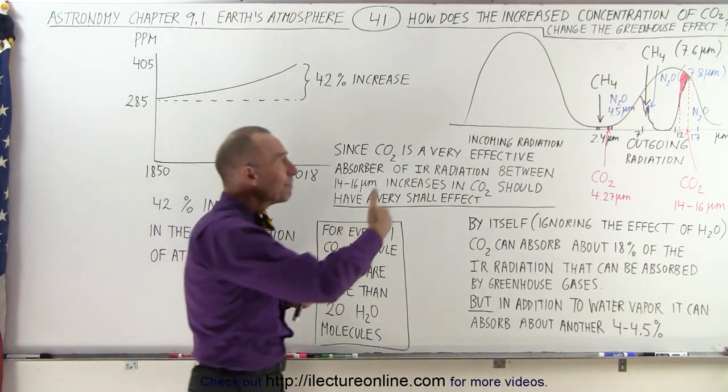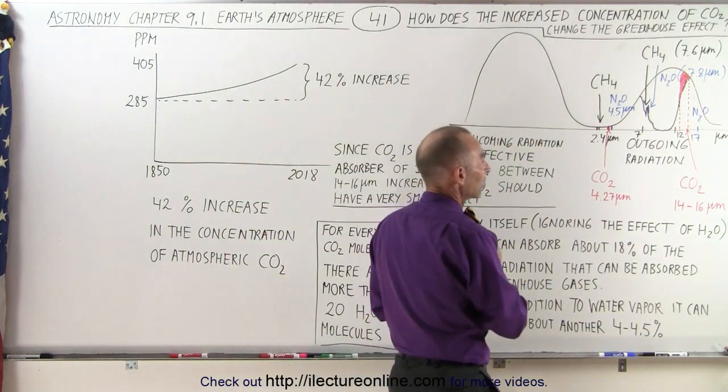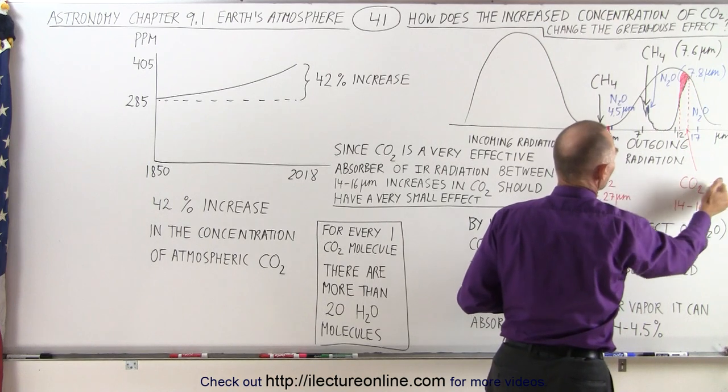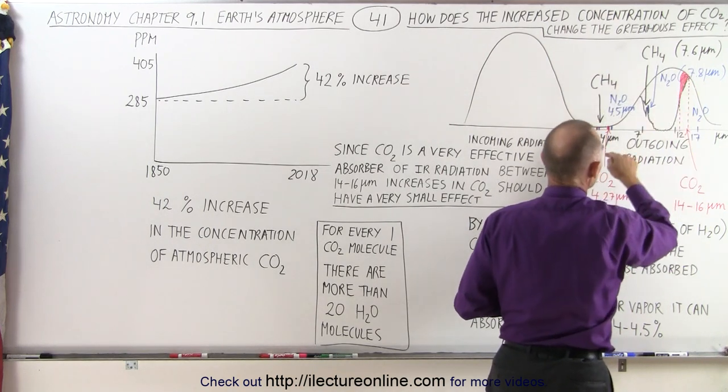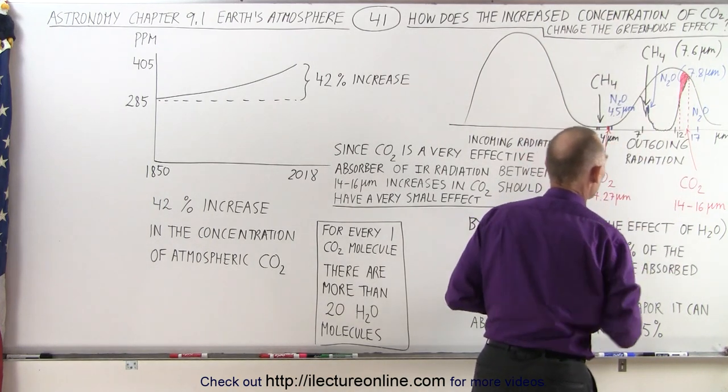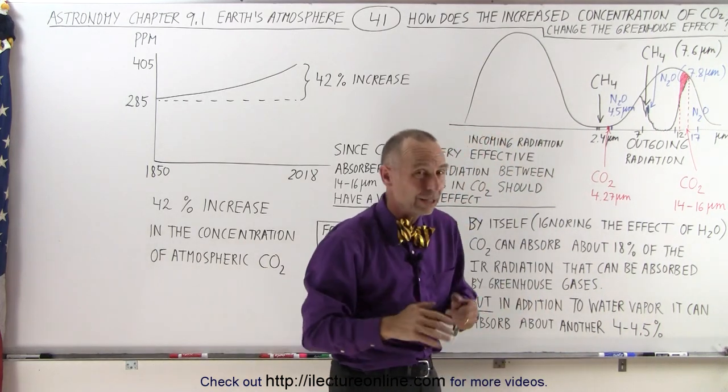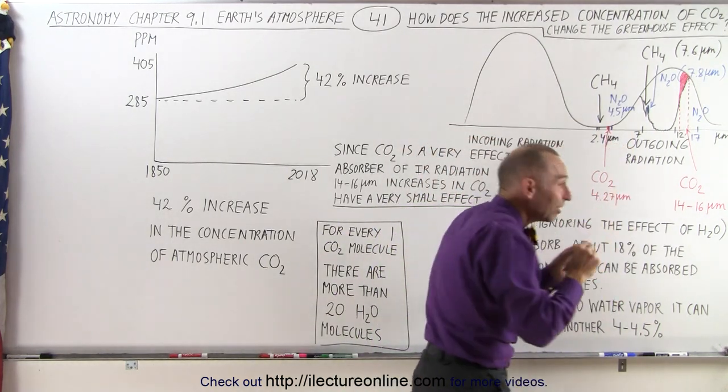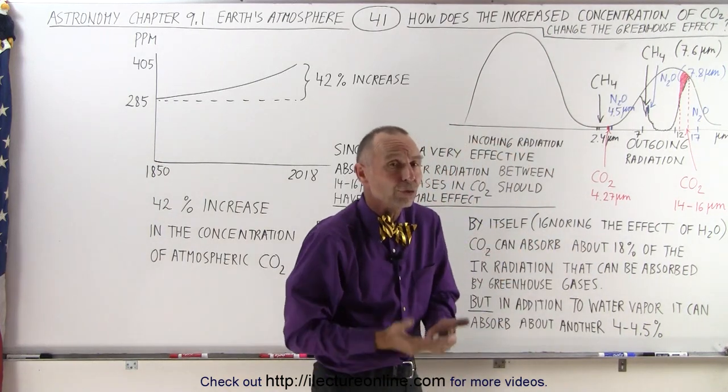Now when we take a look at the bands of radiation that carbon dioxide can absorb, notice that it's a very good absorber between 14 and 16 micrometers right here, and it's a very good absorber at about 4.27 micrometers. Now the 4.27 micrometer band happens in a place where there's very little radiation coming from the Earth's surface.